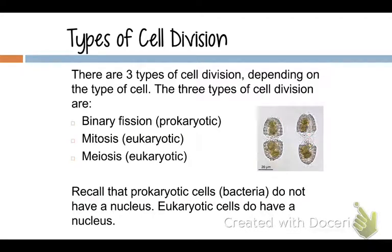The first heading on your outline says 'types of cell division,' and then these three terms — binary fission, mitosis, and meiosis — are on your handout already. You don't need to write down that there are three types of cell division depending upon the type of cell. What you're going to need to write down is an explanation of mitosis, meiosis, and binary fission.